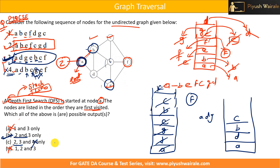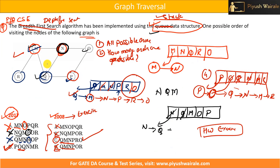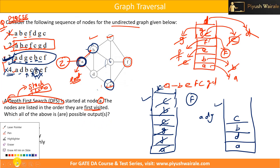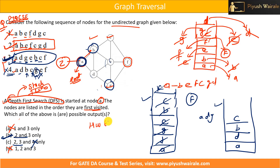Option 4 is not correct, so the only remaining correct answer is option B, which includes sequences 2 and 3. Understanding how the stack drives the DFS exploration of the graph is the key takeaway here. This type of question can be expected in the GATE exam. In the previous video I discussed a BFS question and gave DFS as homework — now similarly, here is a new homework question.